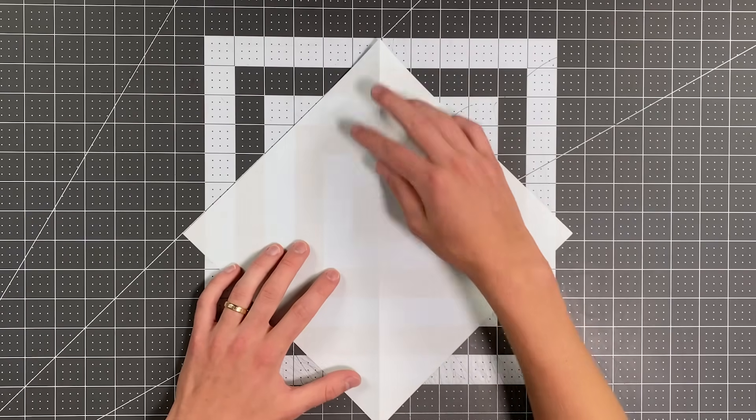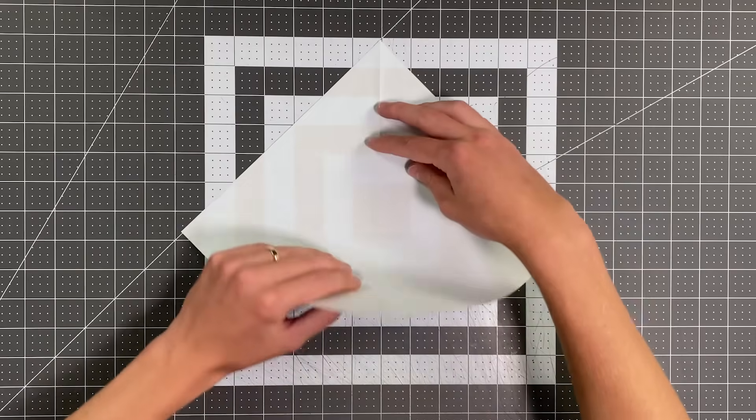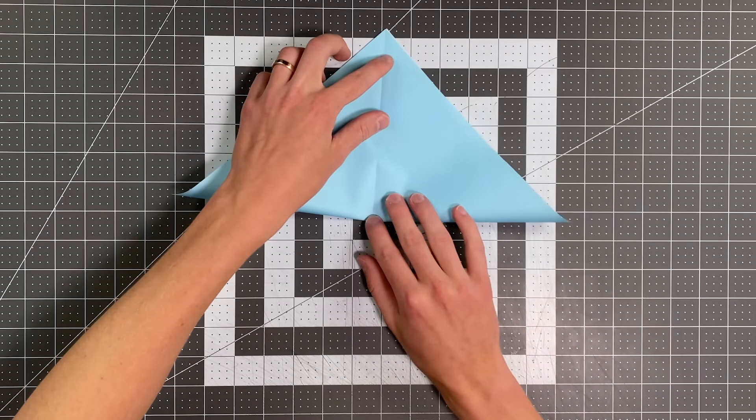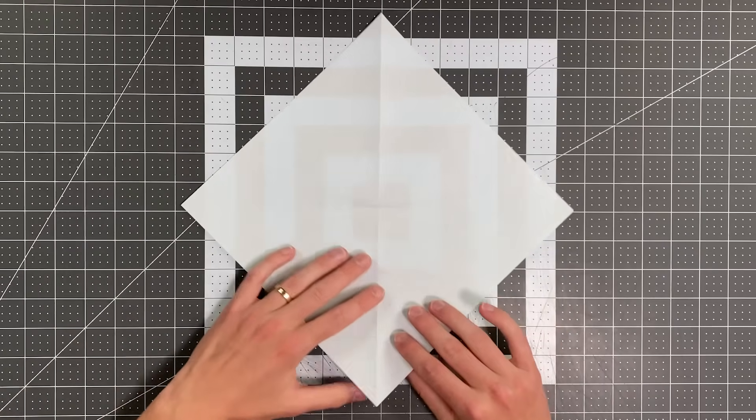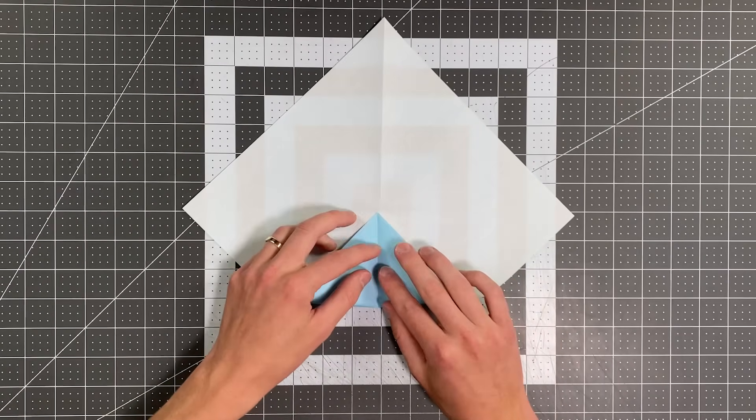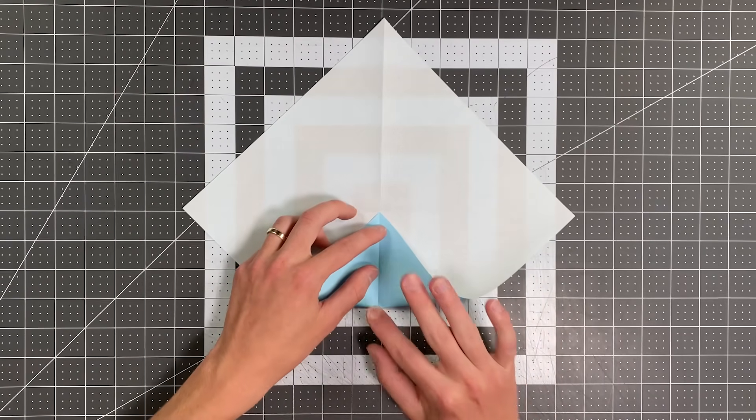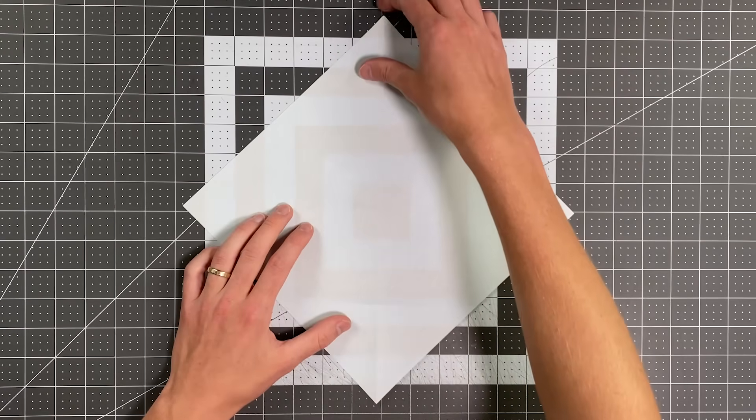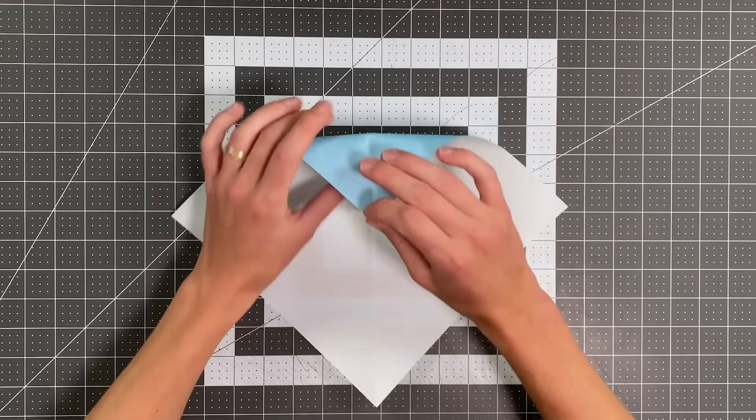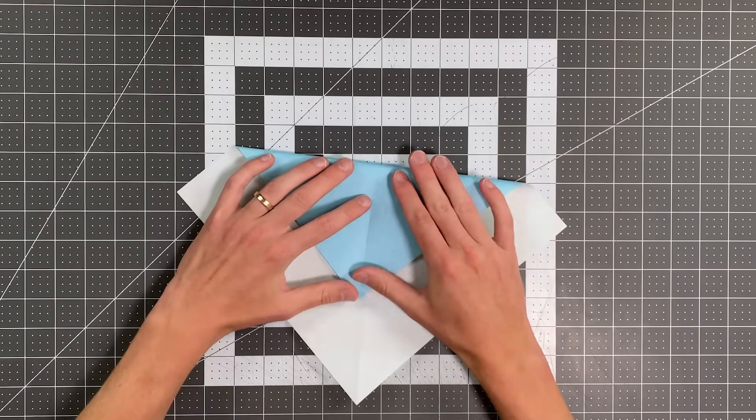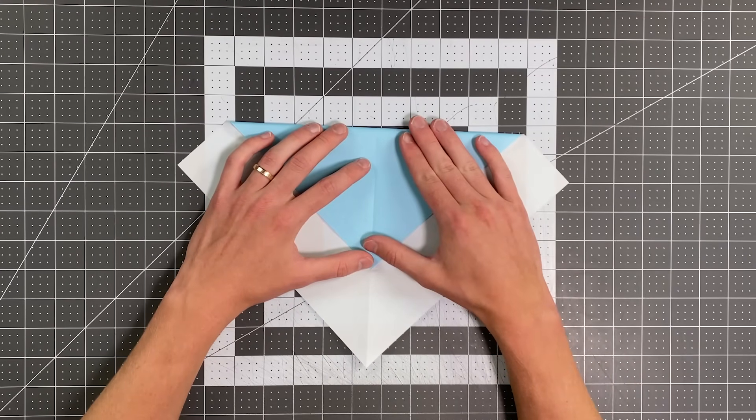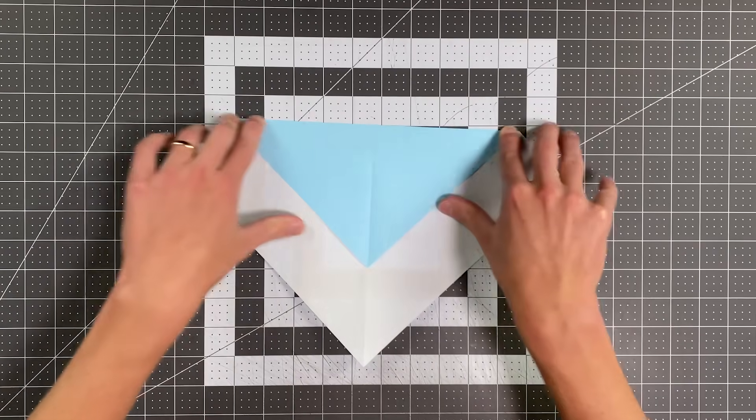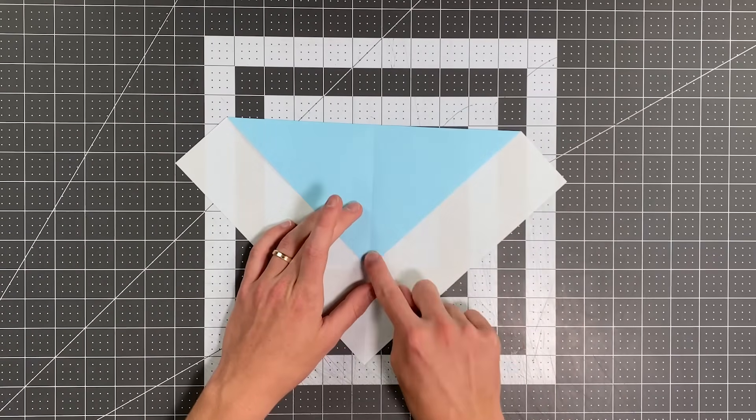And now I'm going to fold this point to my top point, and just make a little pinch crease right in the middle. And then I'll open it up, and I'm going to take this corner to that pinch crease, make another pinch crease, let it open, and now take the top point to your bottom pinch crease, and this time you will crease all the way across the paper. So your paper should look like this.